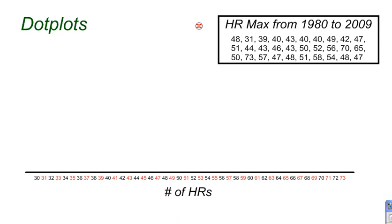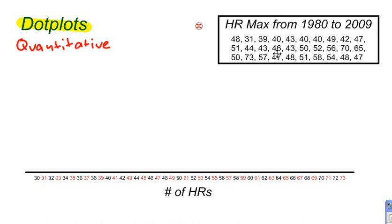Dot plots. What are dot plots? What's another way to display quantitative data? I'm going with my home runs — maximum number of home runs from 1980 to 2009 for an individual player in the major leagues. I've used this data for the last couple of displays, but we're going to use it for dot plots as well.